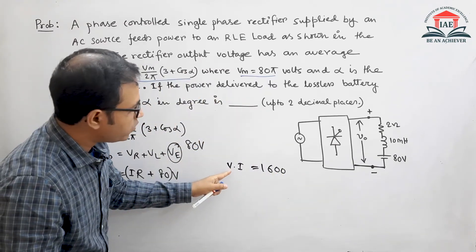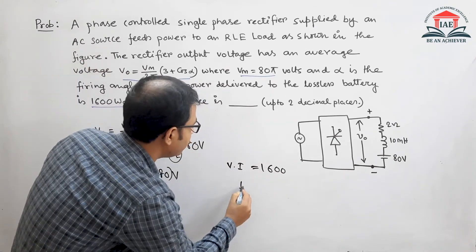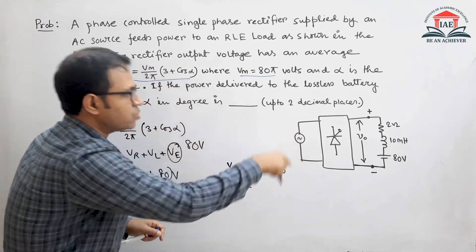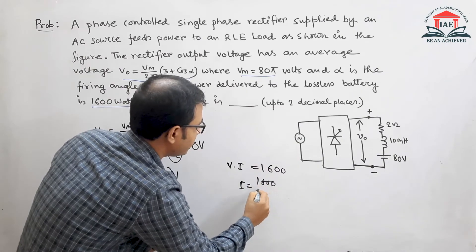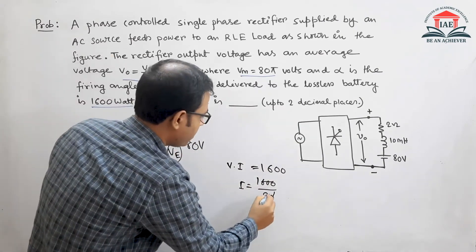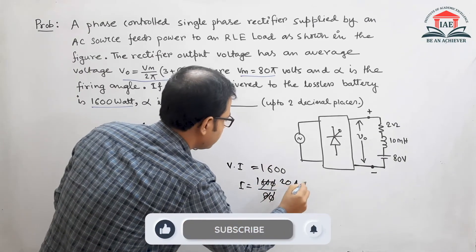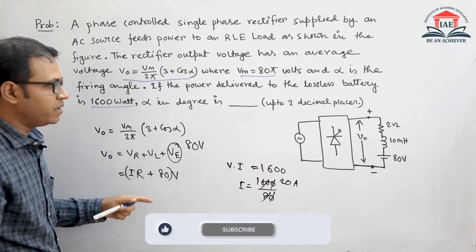At this point, we know V is 80 volts, the voltage across the battery. So from here we can calculate the current I through the battery must be 1600 divided by 80, which is 20 amperes. So I equals 20 amperes.